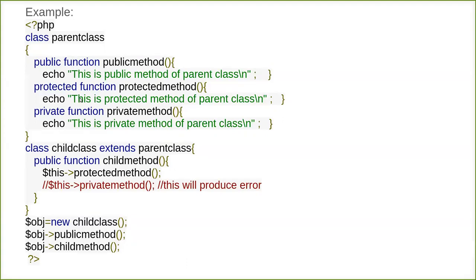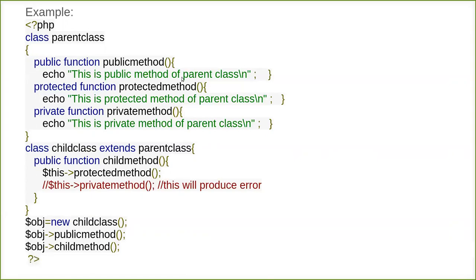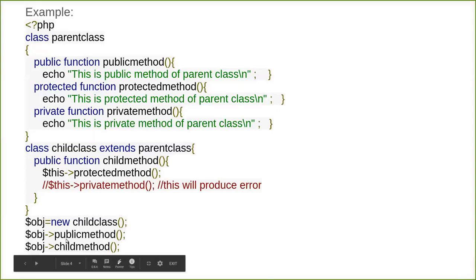The private members of the parent cannot be accessed even by the child. In the main program, we create an object instance of type child. This child can access all the parent functions except the private function. It can access a public member, and it can access a protected member, but only through the child - you cannot access the protected member directly. The private member definitely cannot be accessed in the child class or outside either.